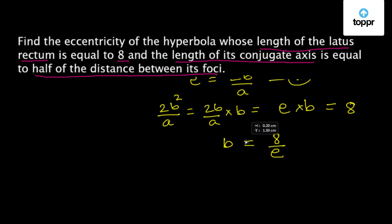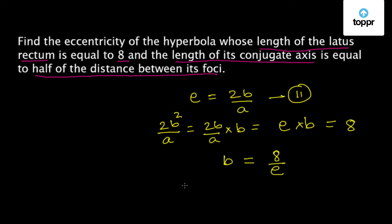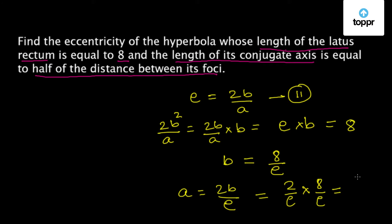Also, from equation 2 we know that a = 2b/E. Substituting the value of b, we get a = (2/E) × (8/E) = 16/E².